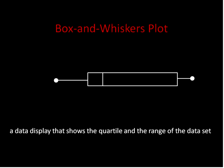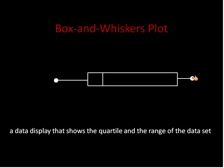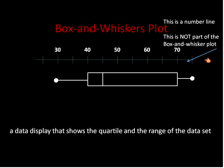Here is an example of a box and whisker plot. It's a data display — basically a visual way of showing the quartile range and range of any set of data. This is the number line that goes above the box and whisker plot. When you're asked to identify parts of a box and whisker plot, you're actually pointing at the plot itself, not the number line above it.